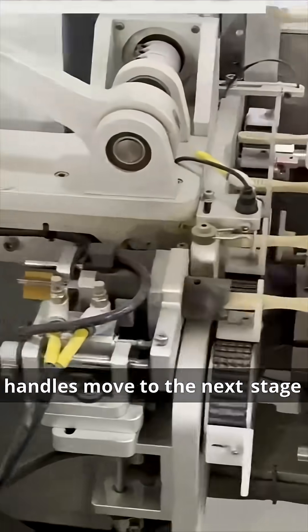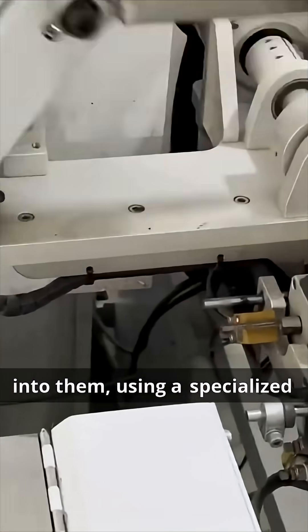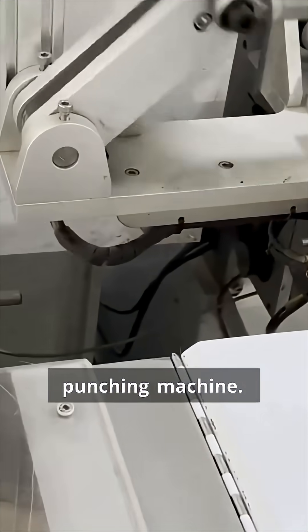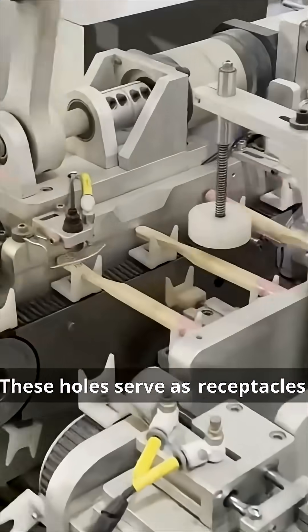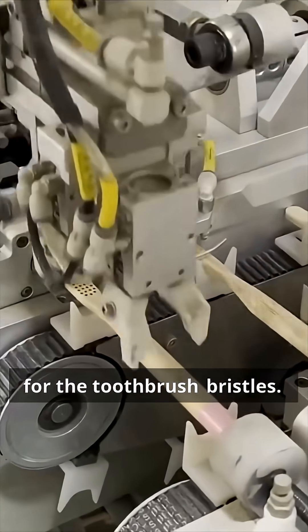Once drilled, the toothbrush handles move to the next stage where bristle holes are punched into them using a specialized punching machine. These holes serve as receptacles for the toothbrush bristles.